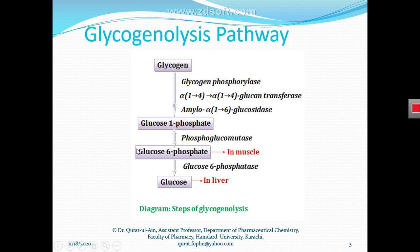In the liver, the enzyme glucose-6-phosphatase acts on glucose-6-phosphate and converts it to free glucose. Phosphatases are enzymes that remove a phosphate group from a substrate, whereas kinases are enzymes that add a phosphate group to a substrate.